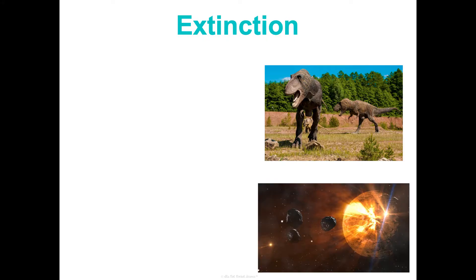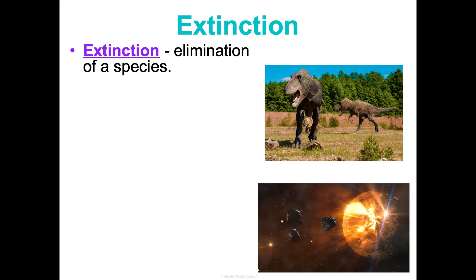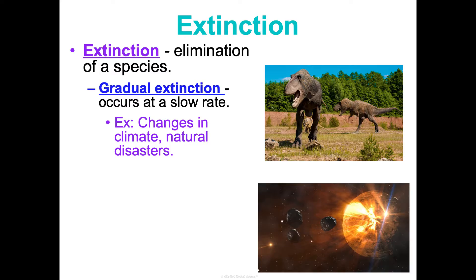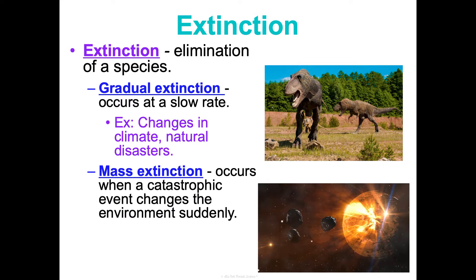Extinction is just the opposite of speciation — something you'll notice is every pattern we talk about kind of has an opposite. Extinction is the elimination of a species, and we see it happening two ways. Gradual extinction occurs at a slow rate over a long period of time — gradual climate changes or natural disasters happening continually. A mass extinction is all at once: some catastrophic event totally wipes out a species, such as a massive volcano erupting, a meteor striking the earth, or a huge tsunami.